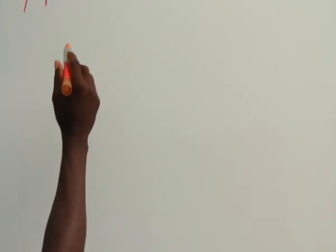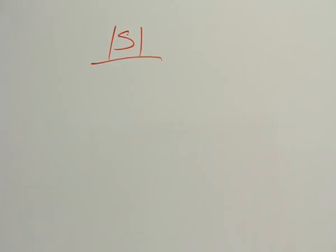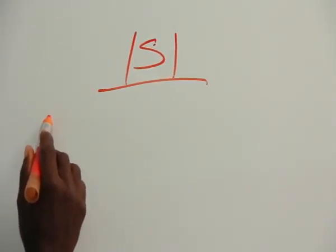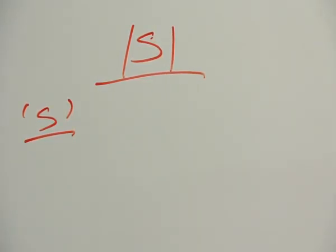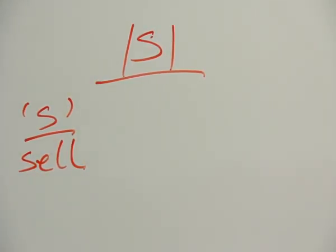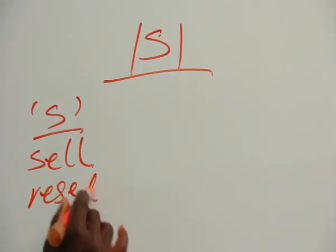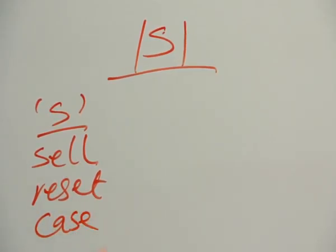Now we are taking the next two alveolar fricatives. We are taking this — this is S. What are the spellings for this sound? That is the first spelling. We take the word 'cell', where it appears initially, or 'set' immediately. And then we have 'case', inside at the end.